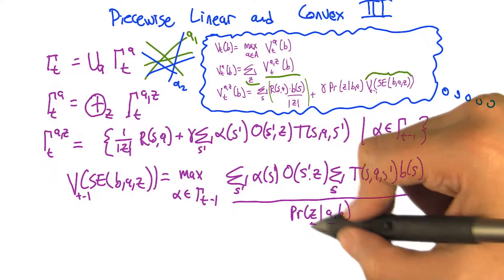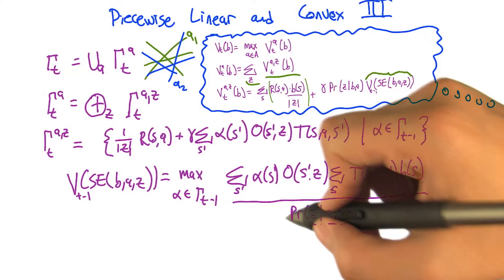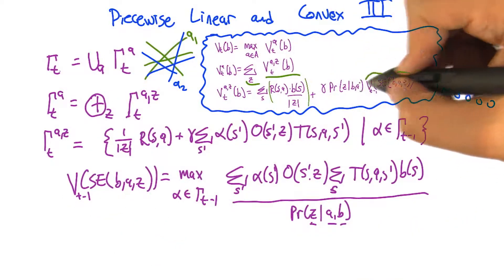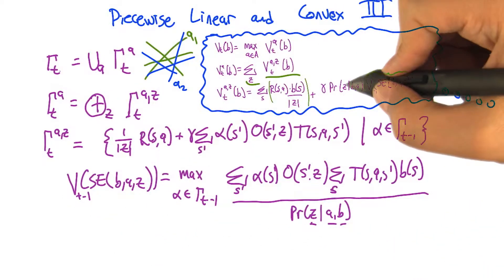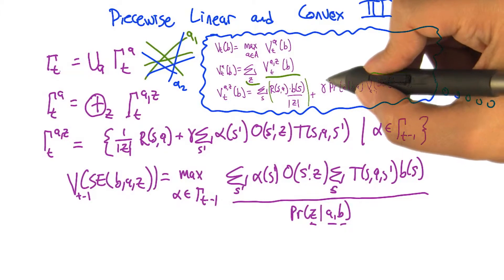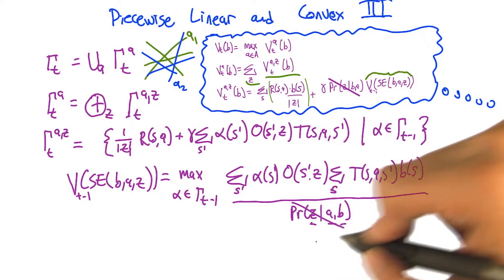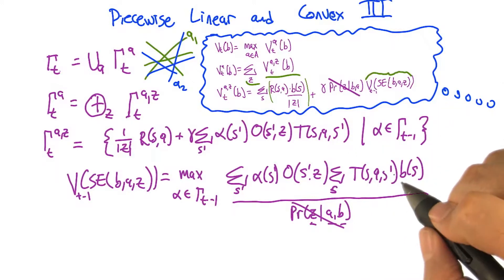This is a highly nonlinear function, but this is the awesome part, ready? Since we're going to ultimately multiply this value function times the probability that z is the actual observation, in other words, probability of z given b comma a, this and this end up canceling. And what we're left with is an actual linear transformation. This weird divide by thing that actually makes things really yucky cancels itself out.